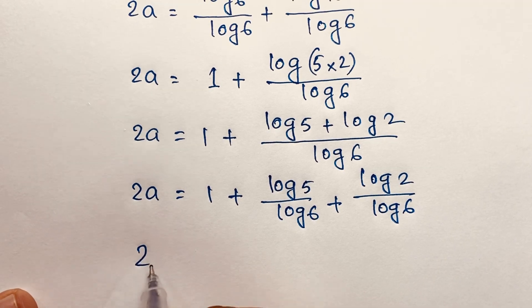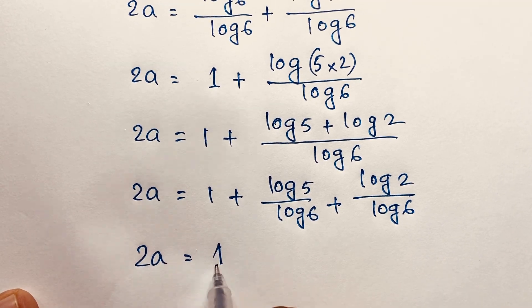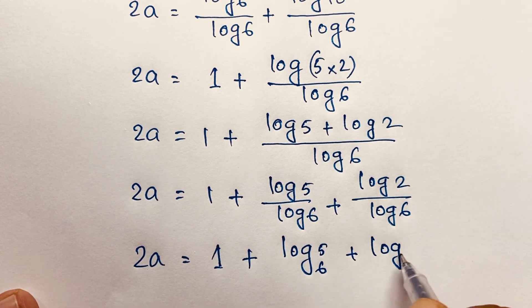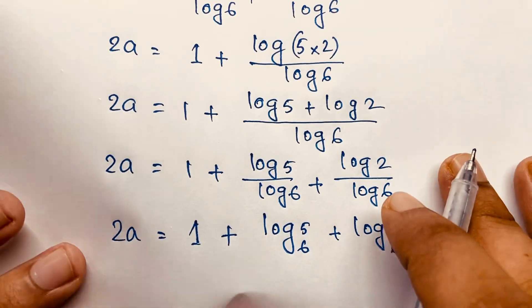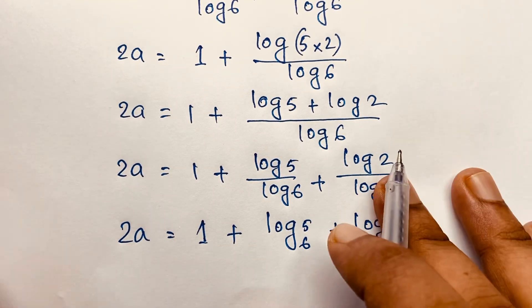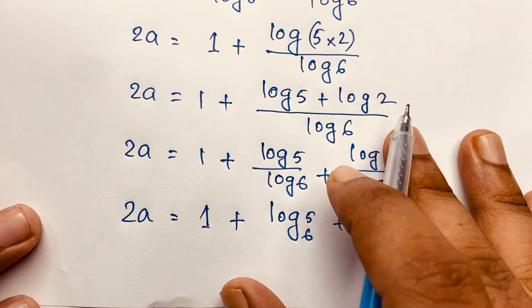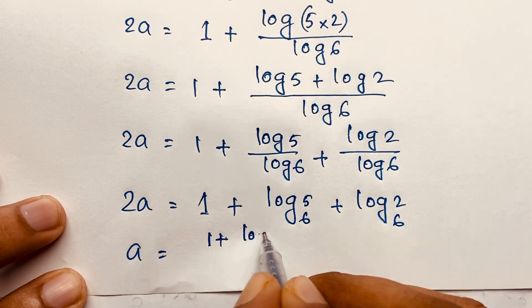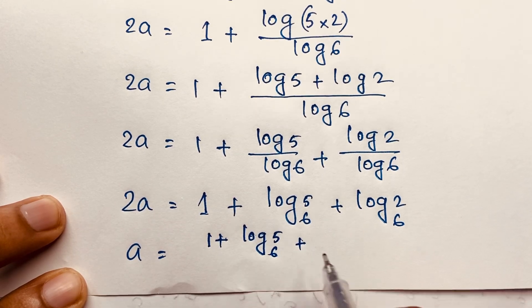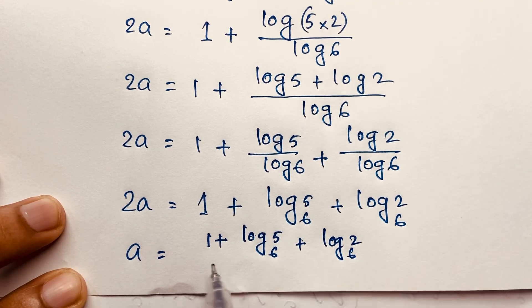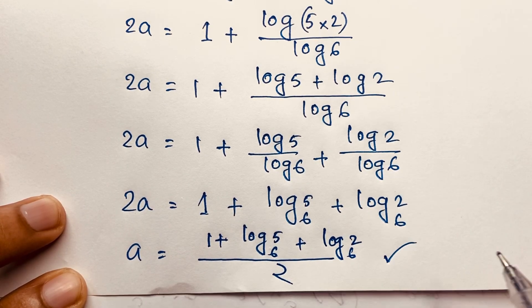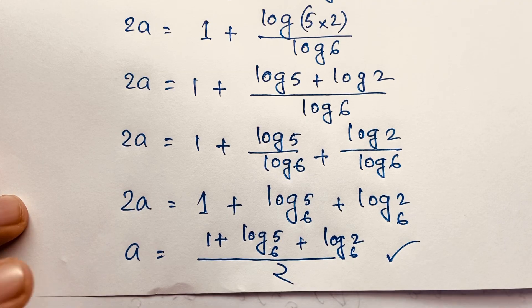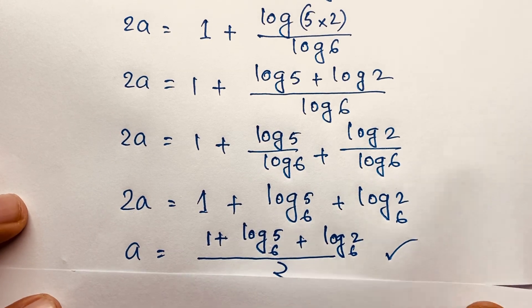So 2a equals 1 plus log base 6 of 5 plus log base 6 of 2. Now dividing both sides by 2, we find a equals 1 plus log base 6 of 5 plus log base 6 of 2, all over 2. This is the value of a in this exponential maths problem.